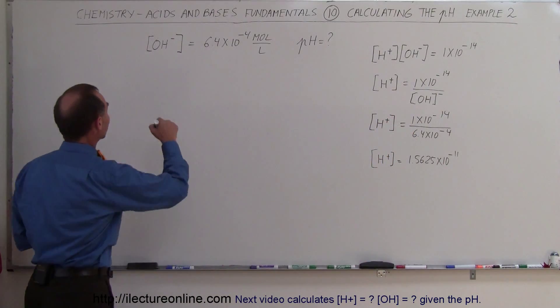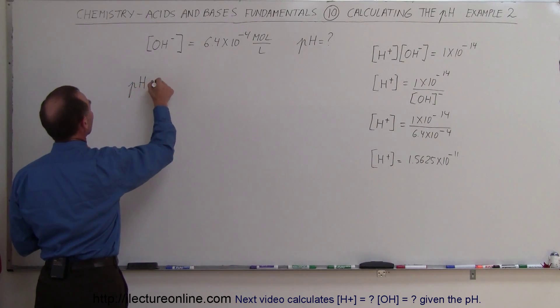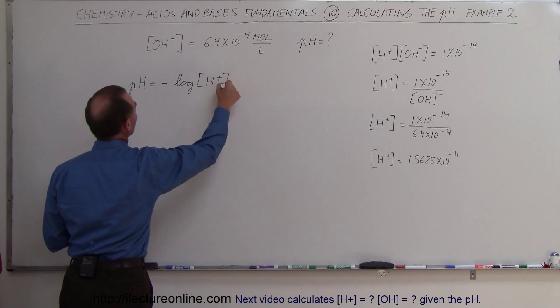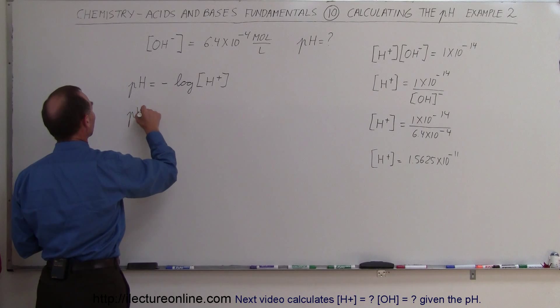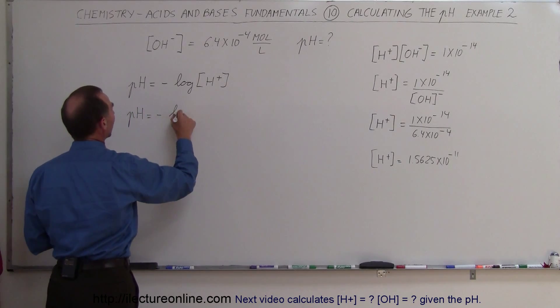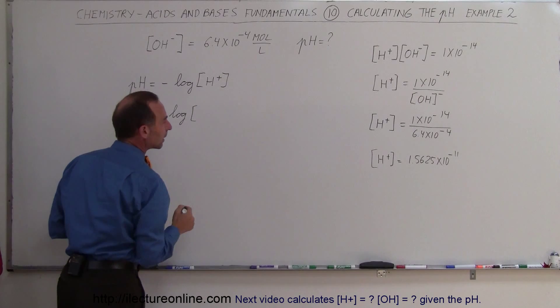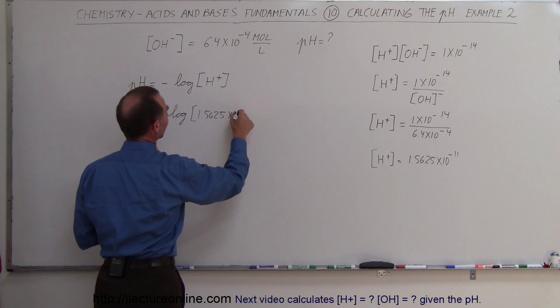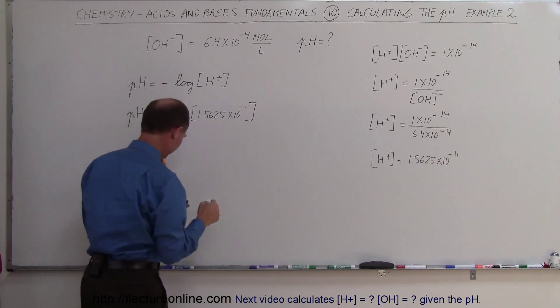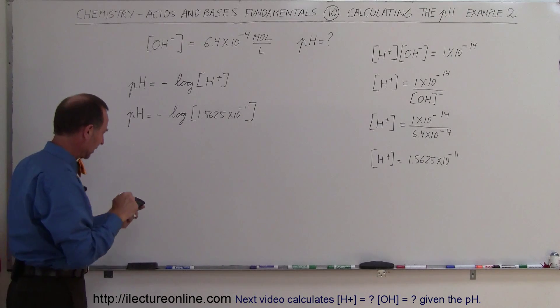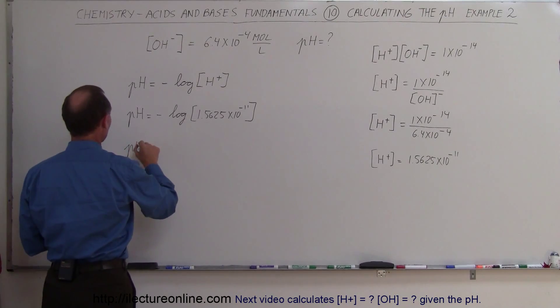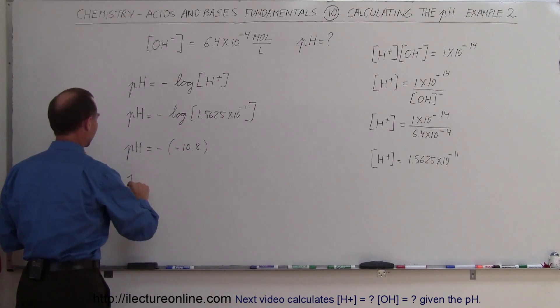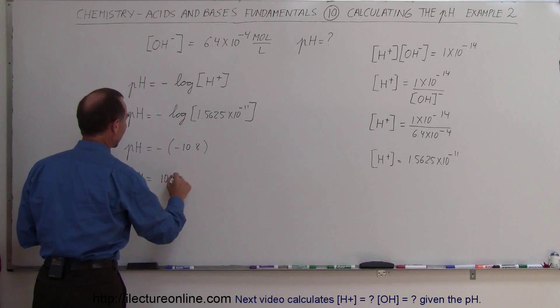So now we can go back to our equation that says that pH can be calculated by taking the negative of the log of the concentration of the hydrogen ion. Since we now know what that is, we simply plug that in, so therefore pH is equal to minus the log of 1.5625 times 10 to the minus 11. So let's take the log of that. And so we have the pH is equal to minus times the minus of 10.8, and so therefore the pH of this solution is equal to 10.8.